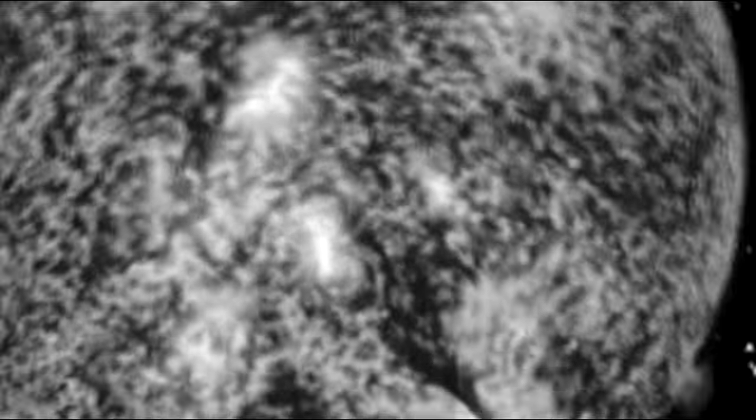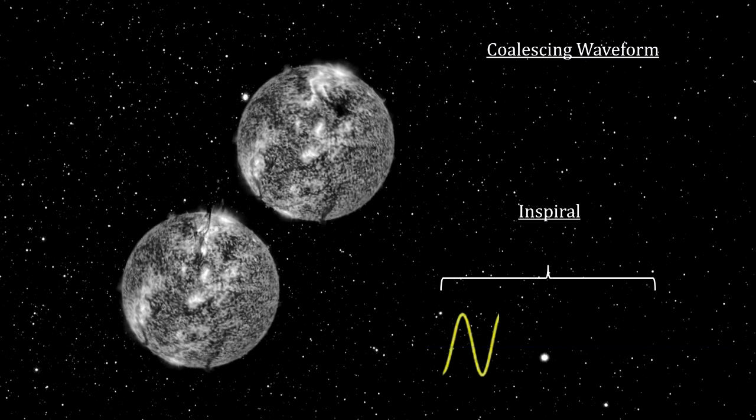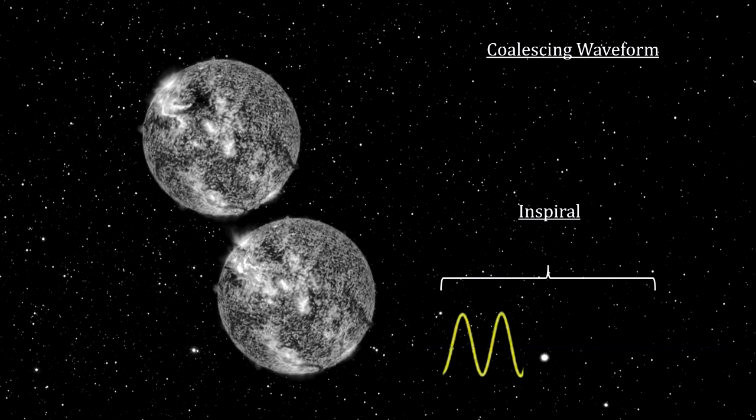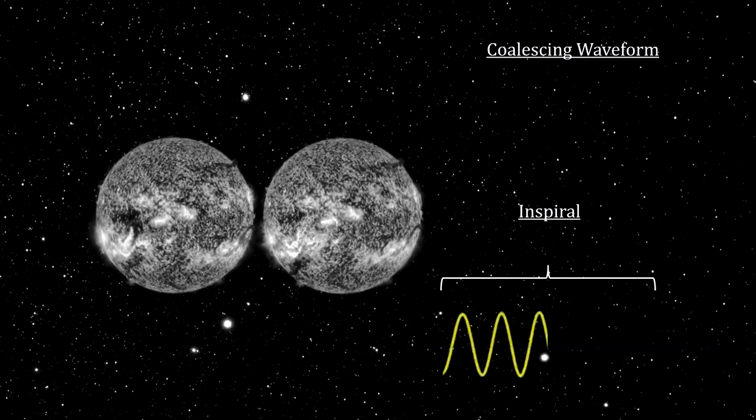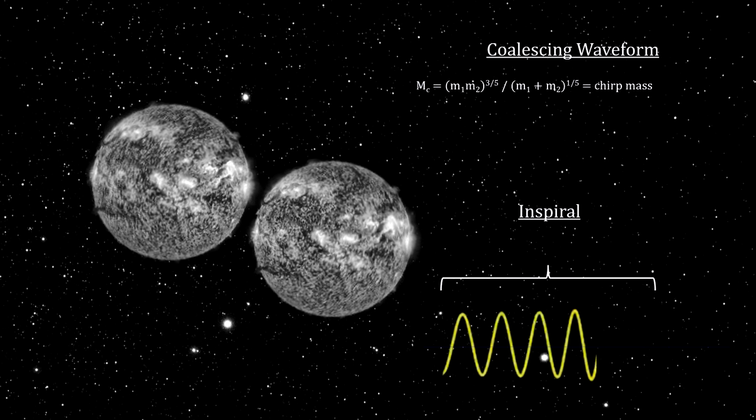You may remember from our segment on gravitational waves that the interferometer waveform amplitude, frequency, and change in frequency, called its chirp, give us a measure of the merging object's mass and distance.